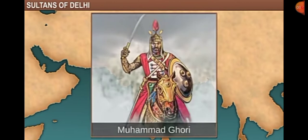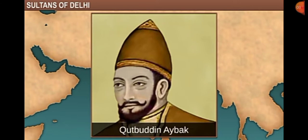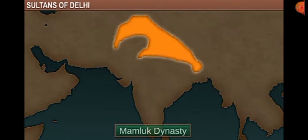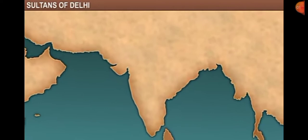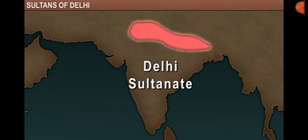For the first time Delhi came under Muslim rule, established by Muhammad Ghori. In 1206, Ghori appointed one of his generals, Qutubuddin Aibak, as the governor of Delhi. This established the first Muslim dynasty in the Indian subcontinent at Delhi, called the Mamluk dynasty, also known as the early Turkish dynasty.